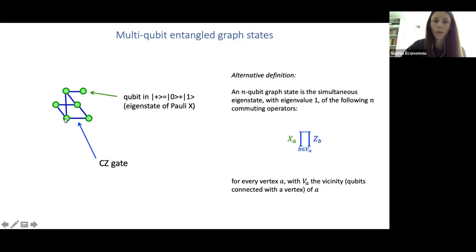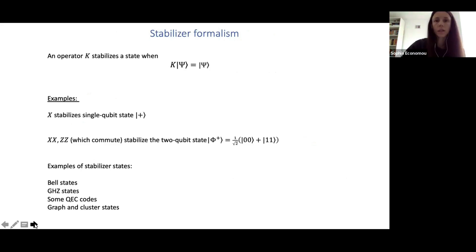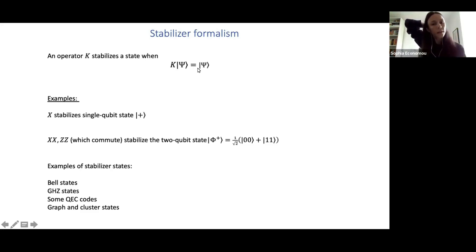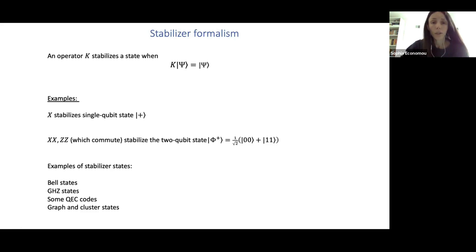Let me give a little more on the stabilizer formalism, which is very useful in quantum information, quantum error correction, and measurement-based quantum computing. An operator stabilizes a state if when you apply it, you get back that state with eigenvalue +1. Simple examples: for the plus state, the stabilizer is X. For two qubits, you can check commutation of Pauli strings by counting how many places they fail to commute — if that's an even number, they commute. Other examples of stabilizer states include Bell states, GHZ states, stabilizer quantum error correcting codes, and graph and cluster states.